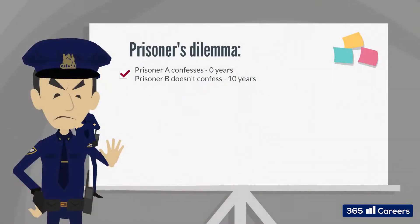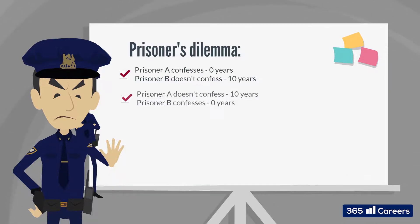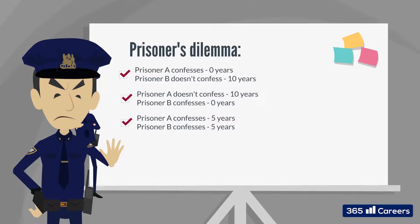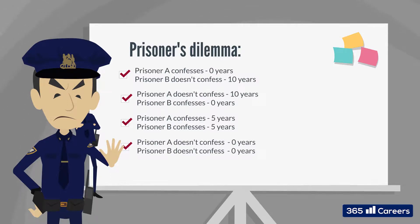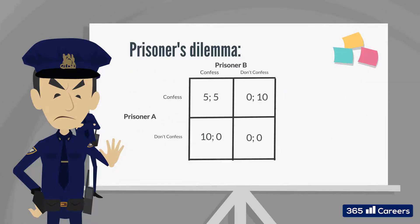If one of them confesses the crime and the other one doesn't, the one who confessed walks away free, while the other one receives a ten-year sentence. If both confess, they will receive a five-year sentence each. And if neither one confesses, they will both walk away free. This is how the typical non-zero-sum game with two players looks.